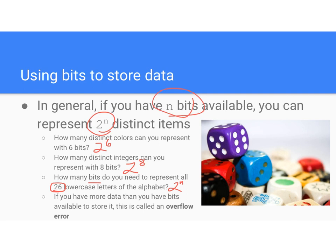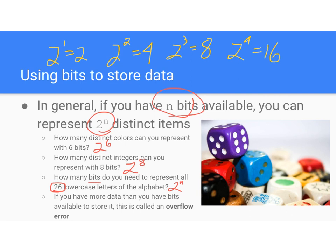Let's work it out: one bit represents 2 things, two bits represent 4, three bits represent 8, four bits represent 16, and five bits represent 32. Since 32 is greater than 26, you need five bits to represent all 26 letters of the alphabet — and you'll have some states left over that can represent punctuation or other symbols.